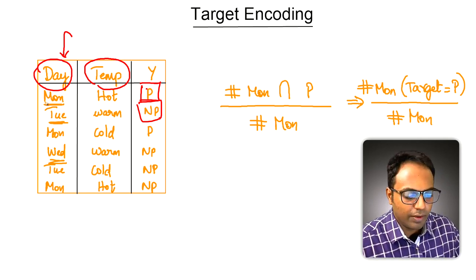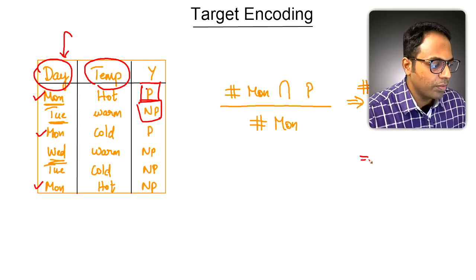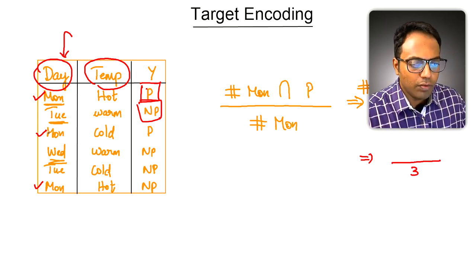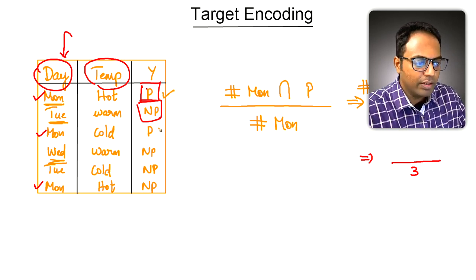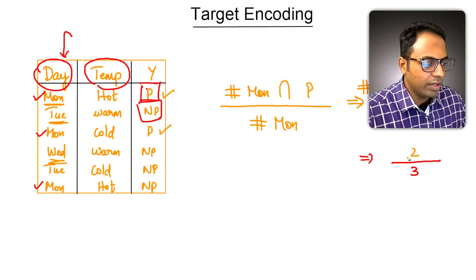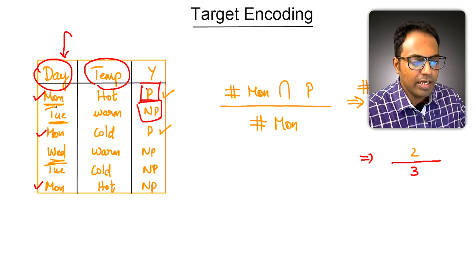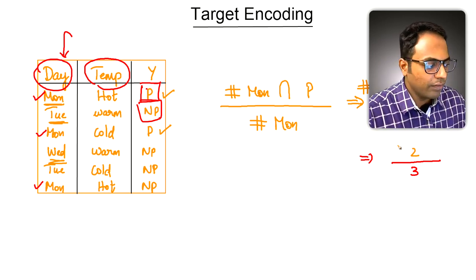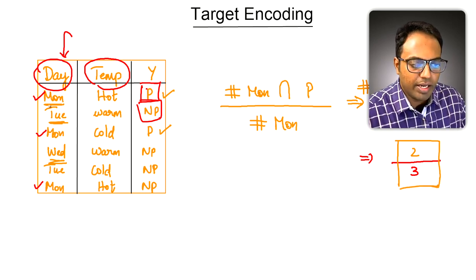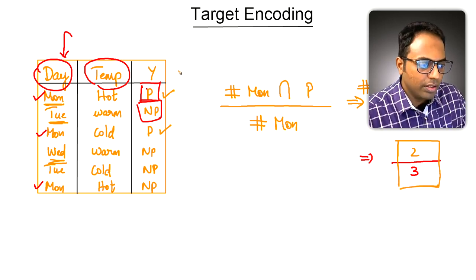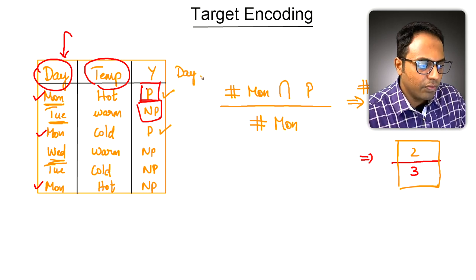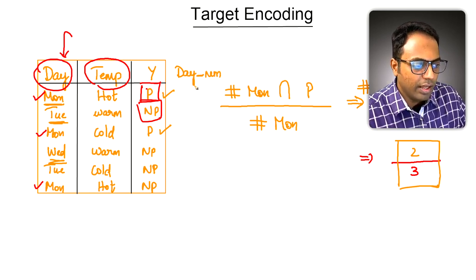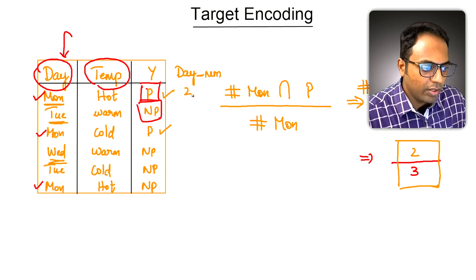Totally, how many Mondays do we have? We have a Monday here, here, and here — so the denominator is three. Out of these three Mondays, the children played on two of them. So two divided by three is the value we substitute wherever Mondays occur — the numeric form of day for Monday is 2/3, 2/3, and 2/3.